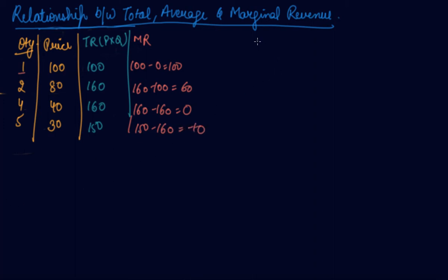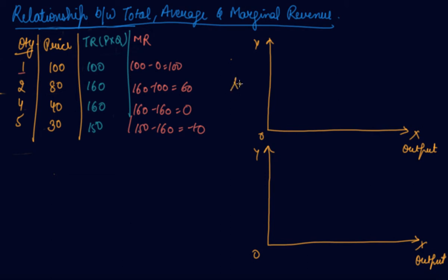Let us see the graph. Let us plot the graph. Let us draw the two parallel graphs. On the x-axis, we always take output. And on the y-axis, here we will take total revenue, and here we will take average revenue and marginal revenue both.